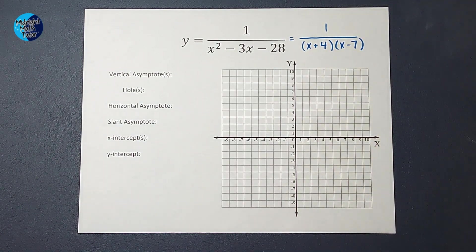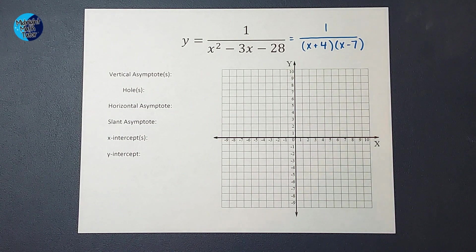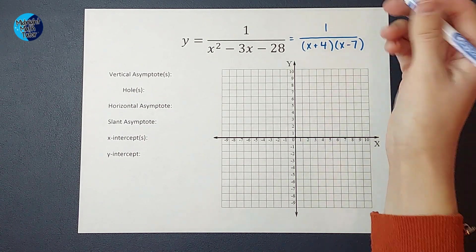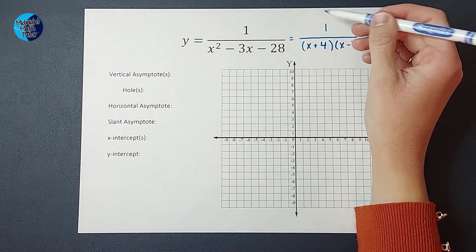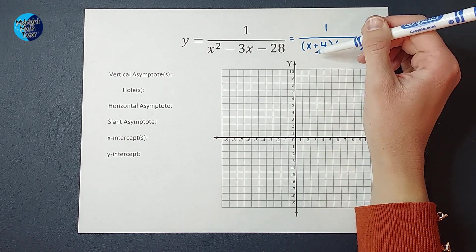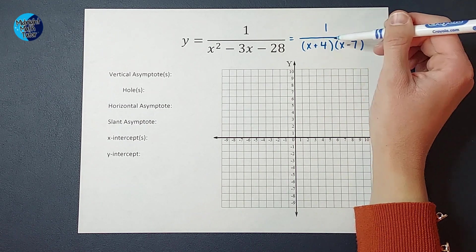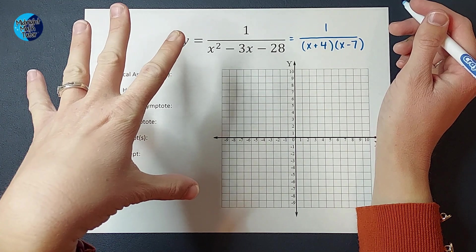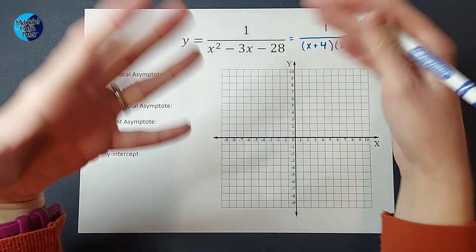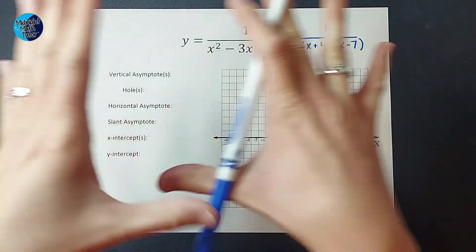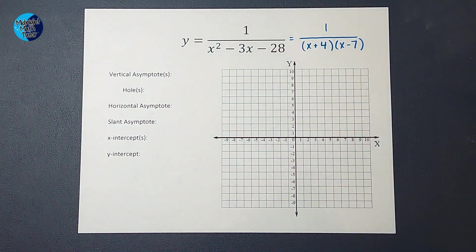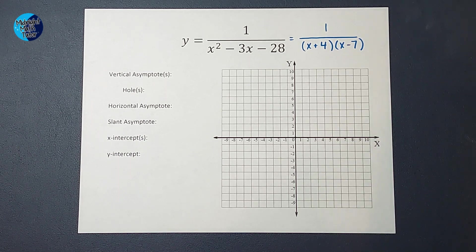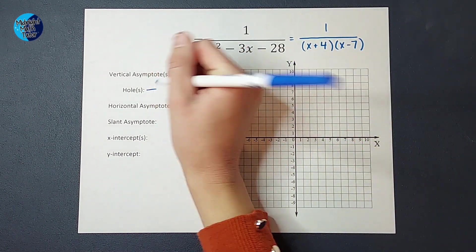The next thing we're going to do is find our asymptotes and check for holes. A hole in your graph is formed if, pretend instead of a 1 on the top, there was an x plus 4 on the top, which would cause those to cancel each other out. If you have something on top and bottom that cancel when you're graphing these, that is where a hole is formed in your graph. So this example does not have a hole, but I will link an example in the corner that does have one if you want to see that. So we checked for holes, but there weren't any.